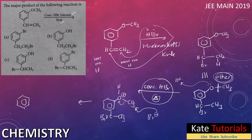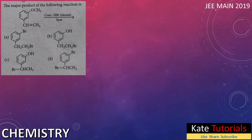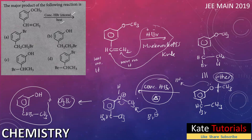The Br minus takes the CH3 group, and electron density returns to oxygen making it neutral. So the products are: a phenol (benzene ring with OH and the -CH(Br)-CH3 chain) and methyl bromide (CH3Br). The O-CH3 bond breaks rather than the benzene ring O-bond, because the benzene ring O-bond has resonance, giving it partial double bond character — so it cannot be broken.